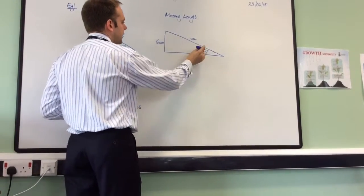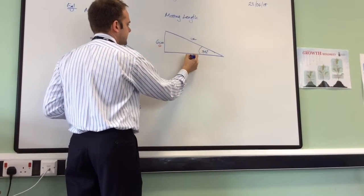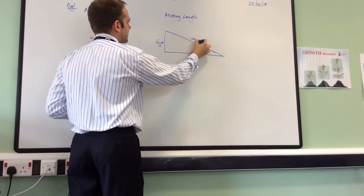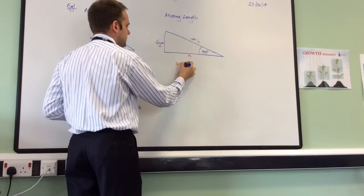so we label it: opposite the angle, adjacent to the angle, and the longest length, the hypotenuse. Then we write down our keyword, SOHCAHTOA.